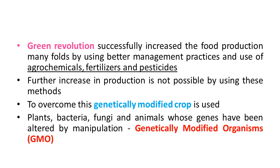Various scientists developed technologies in the field of agriculture, and through research, genetically modified organisms were developed. Plants, bacteria, fungi and animals whose genes have been altered by manipulation are called Genetically Modified Organisms — in short, GMO. By modifying living organisms like plants, bacteria, fungi and animals, higher yield, higher production and higher variety crops are developed.